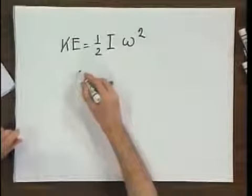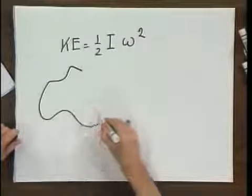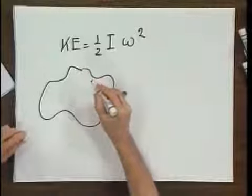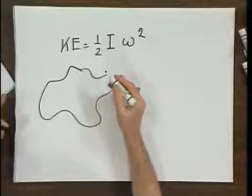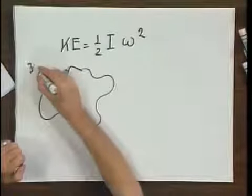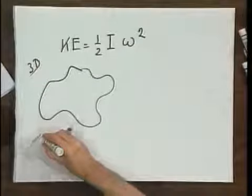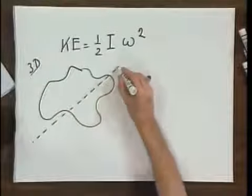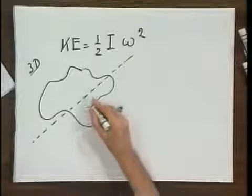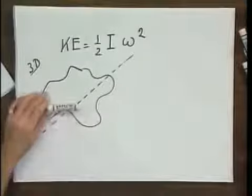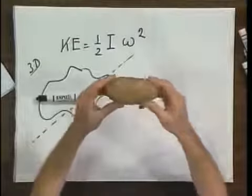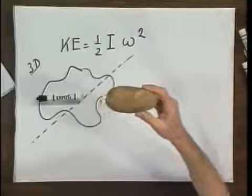How is moment of inertia defined? Suppose we take a three-dimensional object — some crazy three-dimensional object. Think of it as a potato, a 3D object. I rotate this potato about an axis.